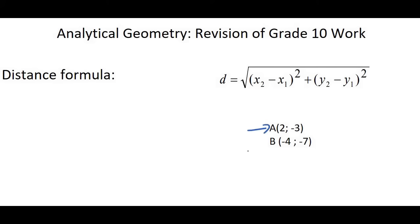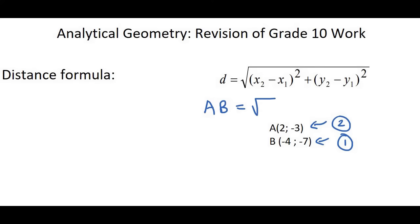Here we've got point A and point B. I'm going to let point A be my second point, and I'm going to let B be equal to my first point. It doesn't really matter which way you do it, as long as once you've made your decision, you stick to that. So we can say AB — that means the distance of AB — will be equal to, then I put my two brackets, and then X2, which is the X value of point number 2, which would be this one. So we say 2 minus the X value of point number 1.